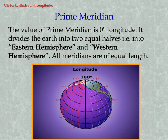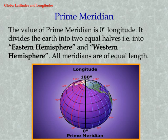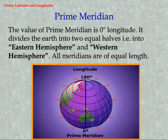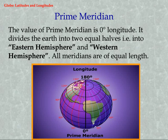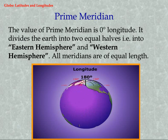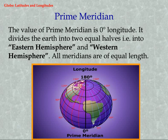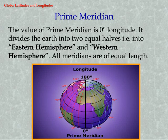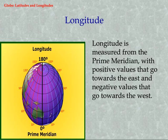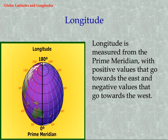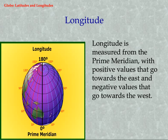Prime Meridian. The value of the prime meridian is zero degrees longitude. It divides the Earth into two equal halves: the Eastern Hemisphere and the Western Hemisphere. All meridians are of equal length. Longitude is measured from the prime meridian, with positive values going towards the East and negative values going towards the West.